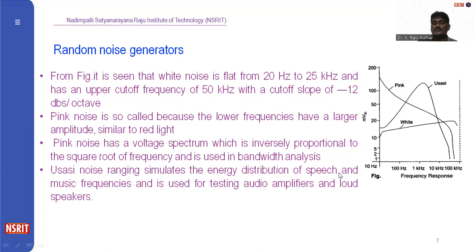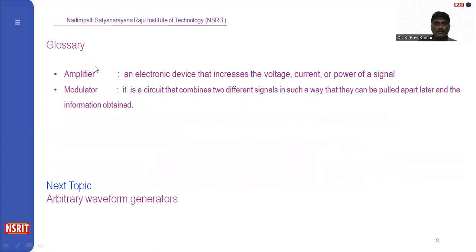USASI noise simulates the energy distribution of speech and music frequencies and is used for testing audio amplifiers and loudspeakers. The maximum amplitude is obtained around 70 to 80 kilohertz, and the gain above 100 and below 200 hertz reaches nearly 140 dB.